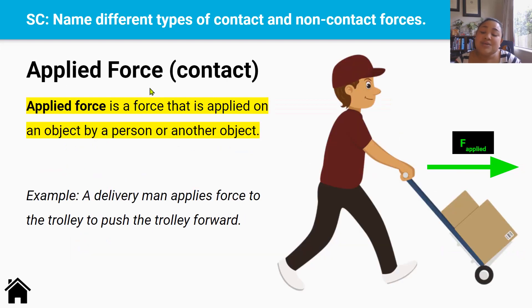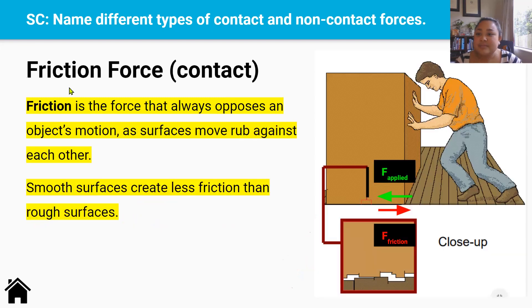Applied force is also another example of a contact force that's applied on an object by a person or another object. So an example here is that this delivery man applies force to the trolley to push it forward. So it's the one pushing the trolley forward.